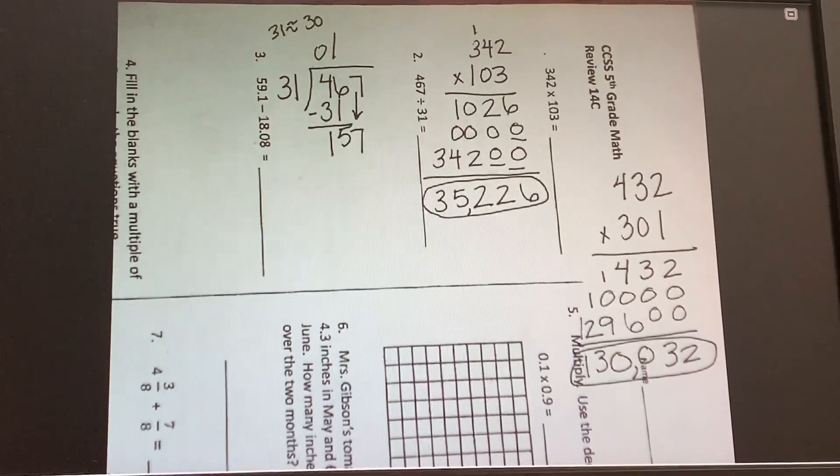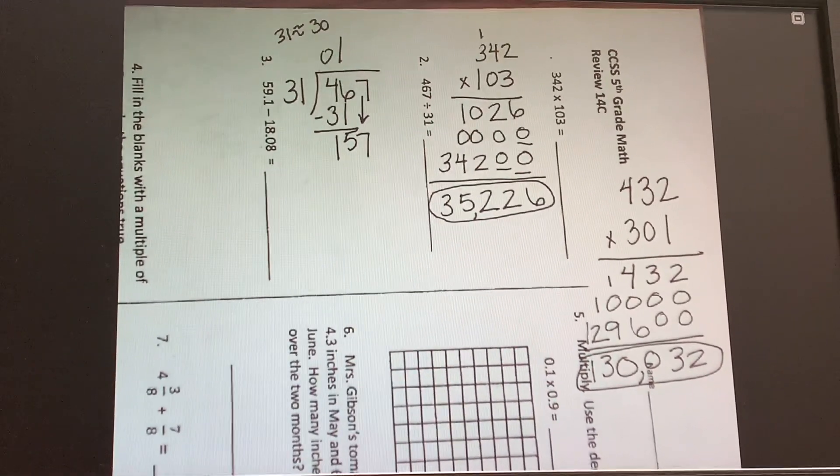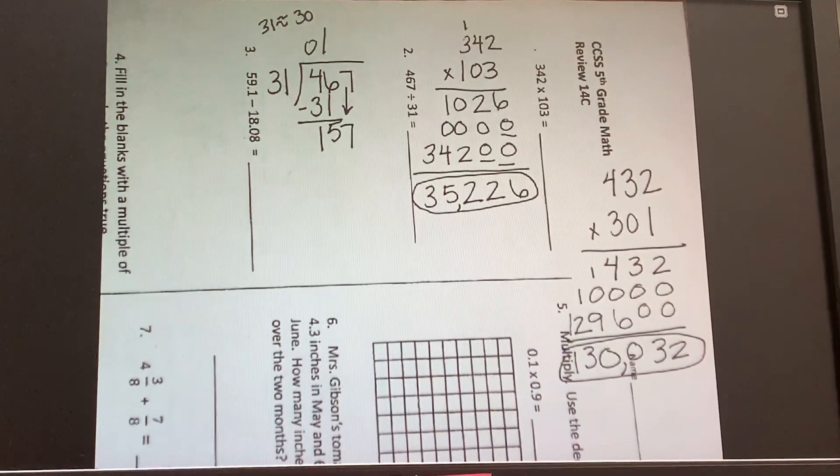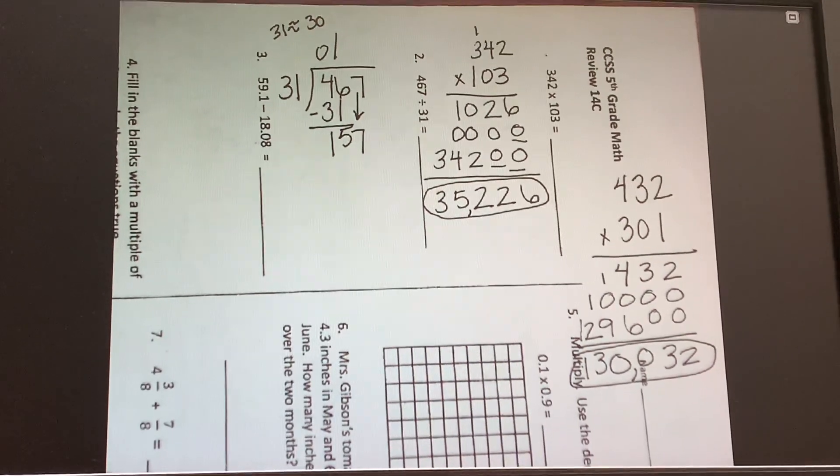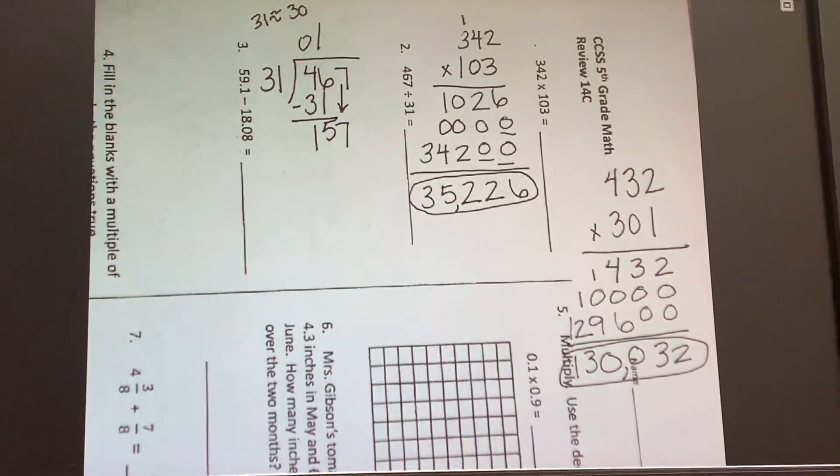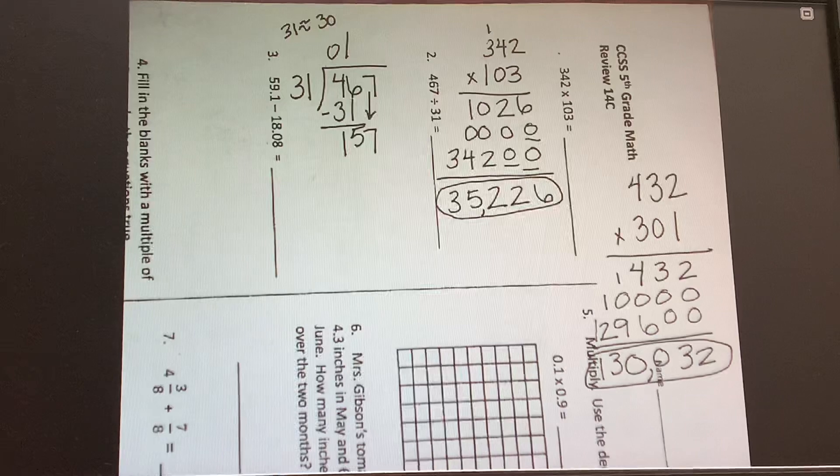Okay, raise your hand if you used 30 in your thinking and why you chose what you did. Ethan? Because five times three is 150. Alright, so I would think the same way. Five times 30 is 150, so that should put us pretty close, alright?